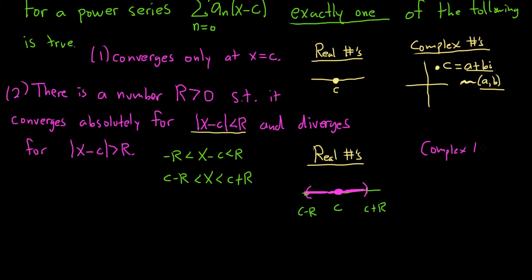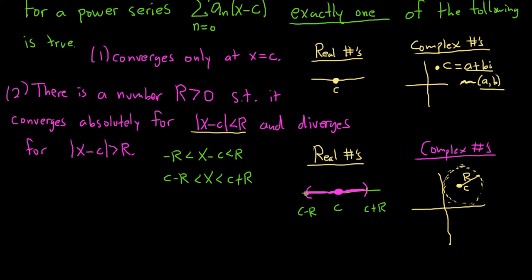In the complex case, this is where it gets really cool. R is called the radius of convergence — you might say there are no circles in this problem. But when you look at complex numbers, c is the center of a circle. That's why it's called the center of the power series — it's actually the center of a circle with radius R. It converges everywhere in this open circle, called an open disk. In the real case it's an open interval; in the complex case it's an open disk. It diverges outside the disk, and the theorem doesn't tell you what happens on the boundary.